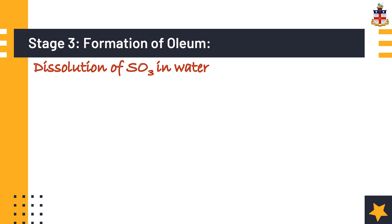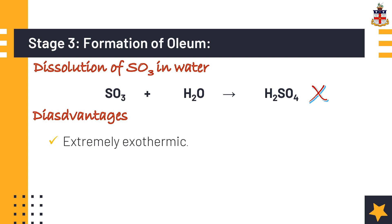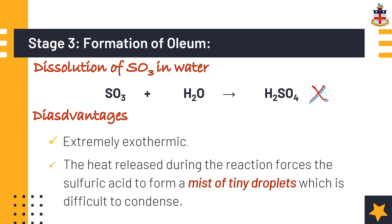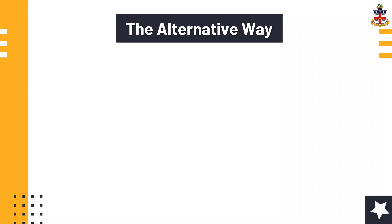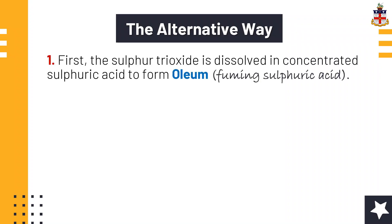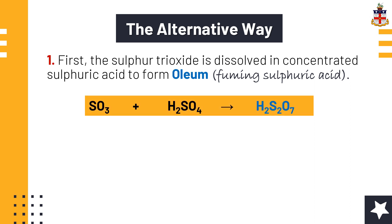Sulfur trioxide can be directly dissolved in water to produce sulfuric acid, but this cannot be done because of certain limitations. The reaction is extremely exothermic and difficult to control. The heat released during the reaction forces the sulfuric acid to form a dense mist of tiny droplets which is very difficult to condense. Therefore, an indirect way is used to produce sulfuric acid. In the alternative method, sulfur trioxide is first dissolved in concentrated sulfuric acid to form oleum, also known as fuming sulfuric acid, with the formula H₂S₂O₇.